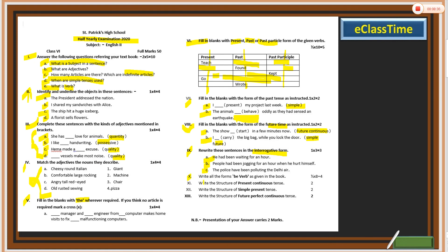Number ten is a bit challenging. You have to read the chapter to find all the forms of the be verb — a few forms are given in the book. Number eleven: write the structure of present continuous — this is in the book, in the small note boxes in the chapter. Also write the structure of simple present. Read the chapter very carefully; simply skimming won't be enough. And finally, write the structure of future perfect continuous.